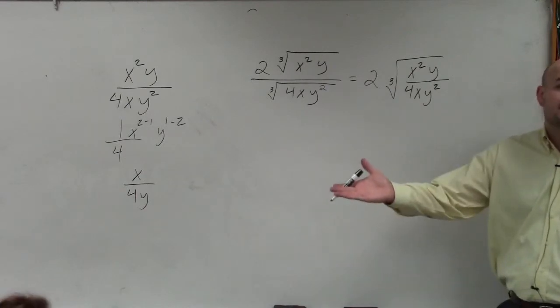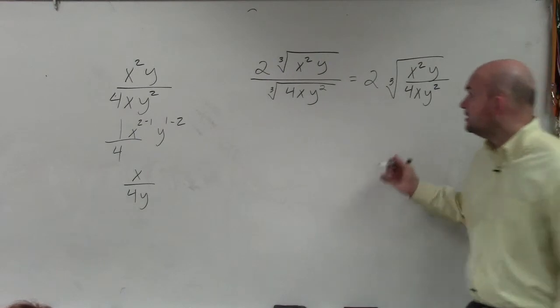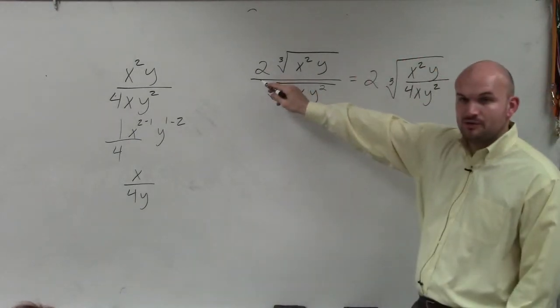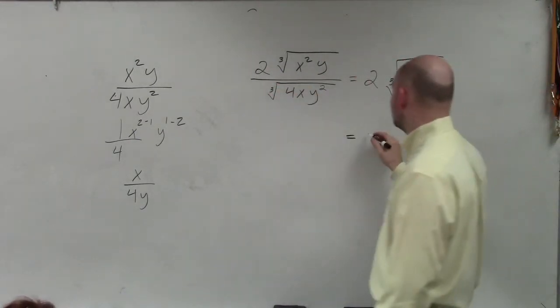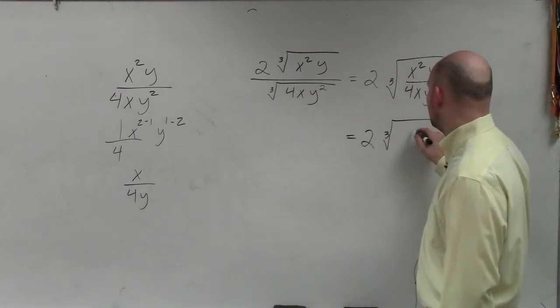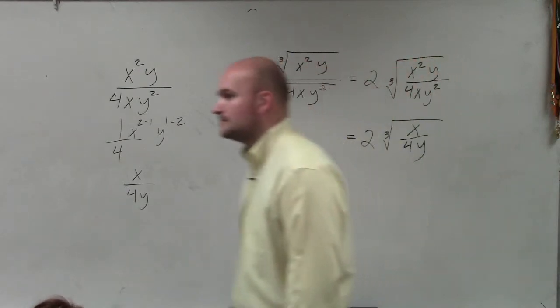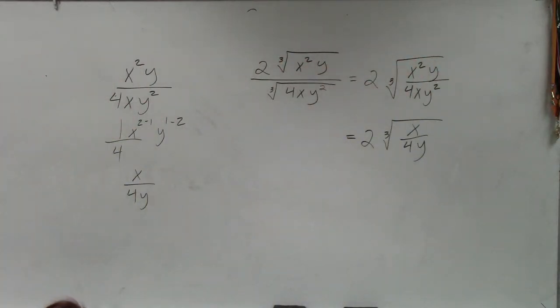And that's from your test that you took. We're supposed to know how to do that. So therefore, I still have the 2 on the outside. I can't divide 2 by anything. So I have 2 cube root, and then my simplified expression is x over 4y. And you can't take the cube root of any of those numbers. So I have that right. OK.